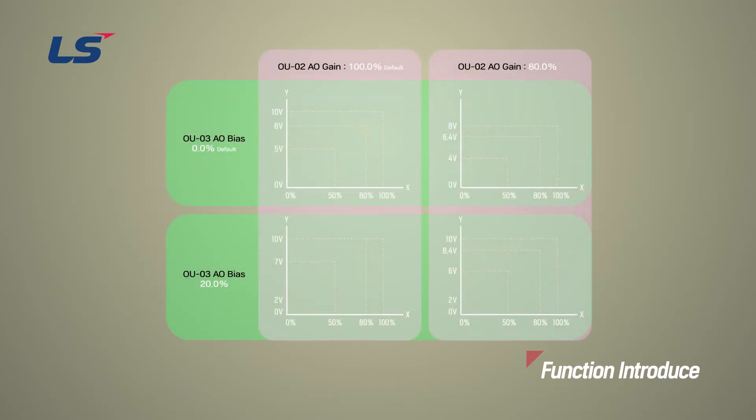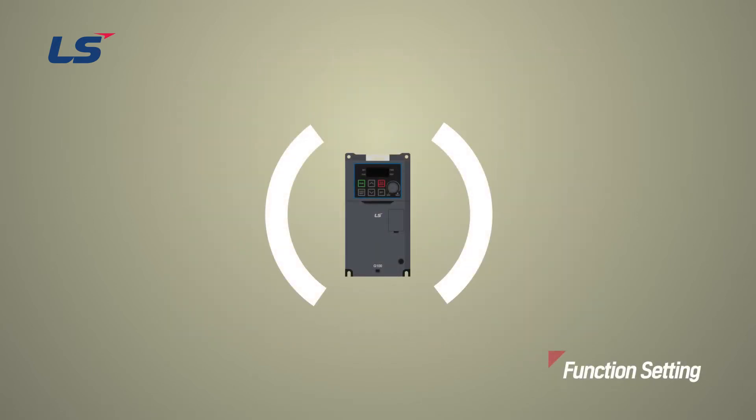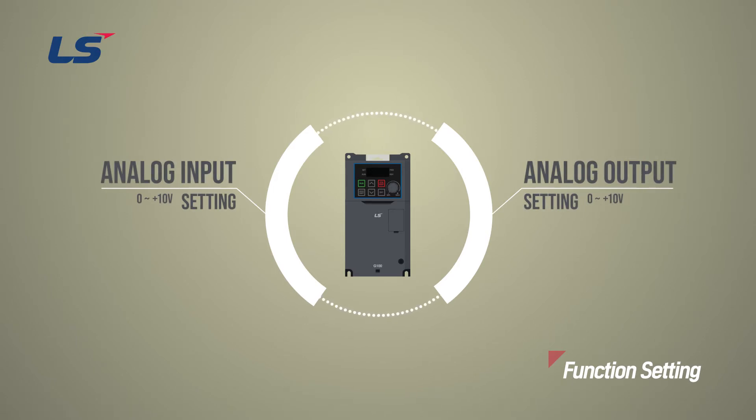In this case, the actual output voltage or current can be adjusted according to the output value. Next, we will learn how to set the analog input-output range.